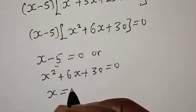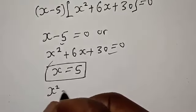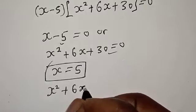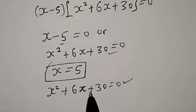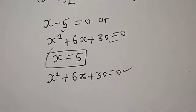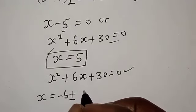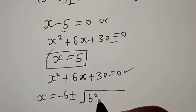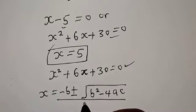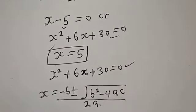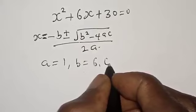From the first case, s is equal to 5 — that is the first root. The second case is s² plus 6s plus 30 equal to 0. This is a quadratic equation. Using the quadratic general formula: s is equal to minus b plus or minus square root of b² minus 4ac, over 2a.